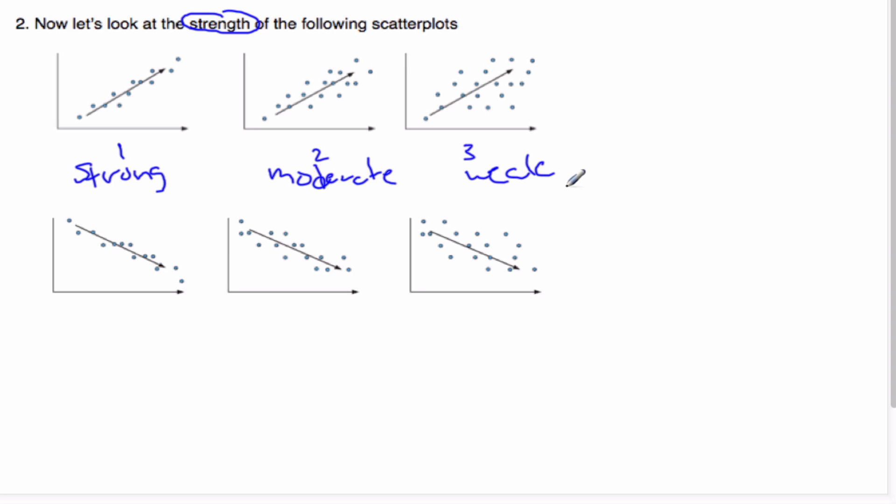But all those first, those top three, they're all positives. We've got positive-strong, positive-moderate, and positive-weak correlations. Similarly, these are all negative direction, but again, this is strong, moderate, and weak.